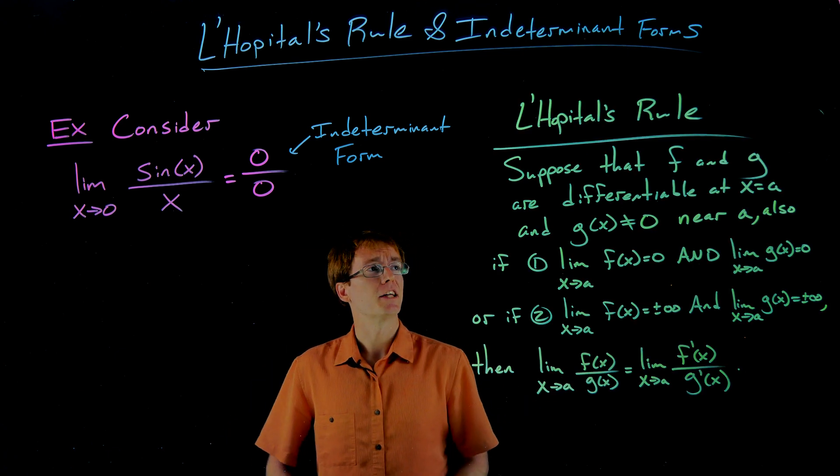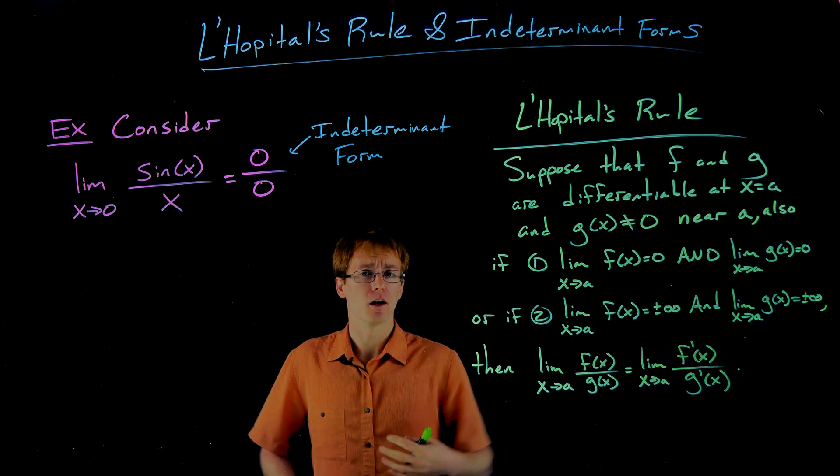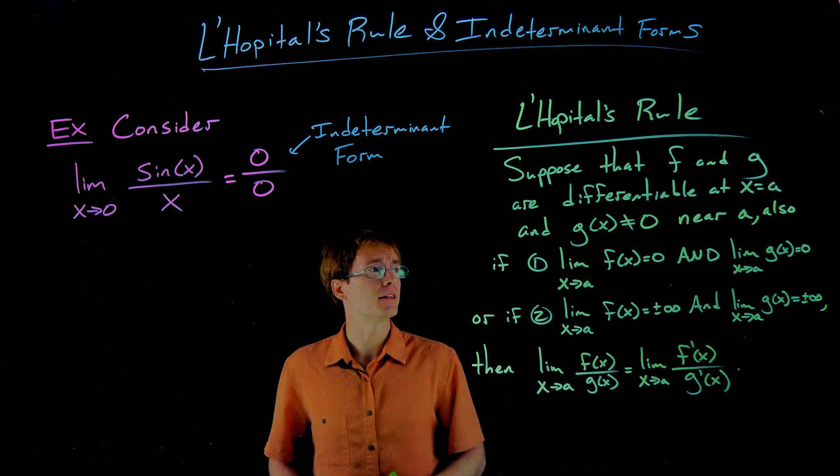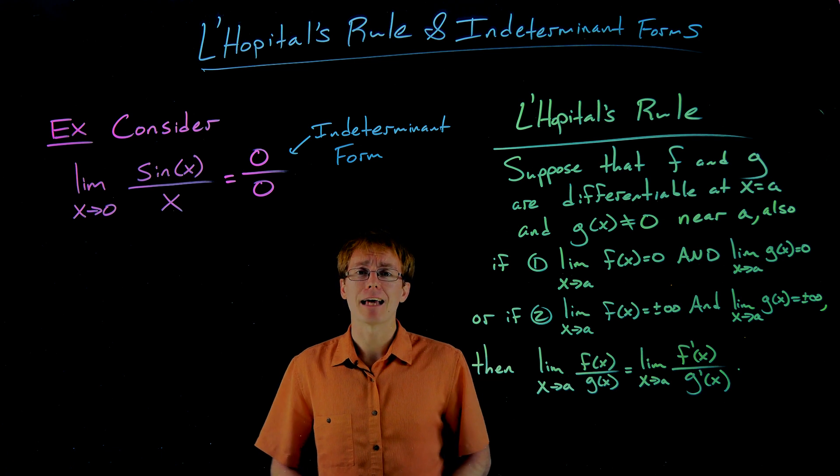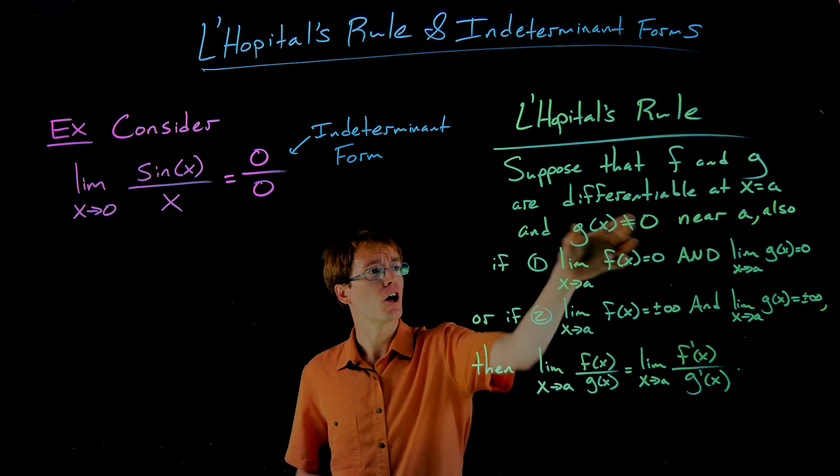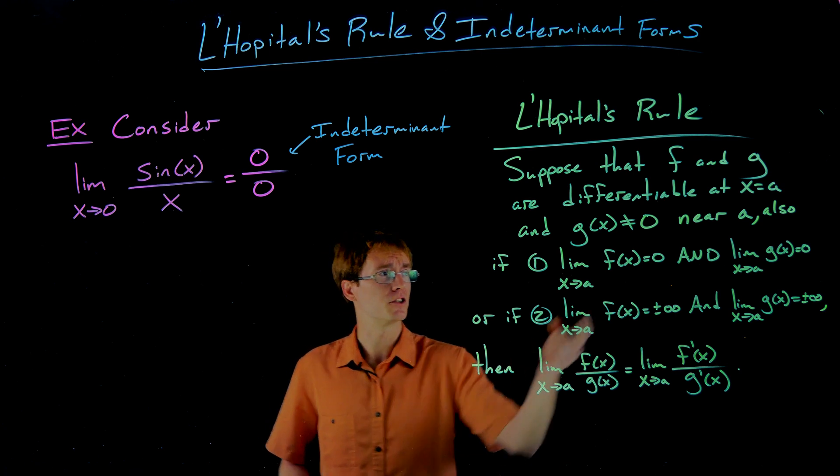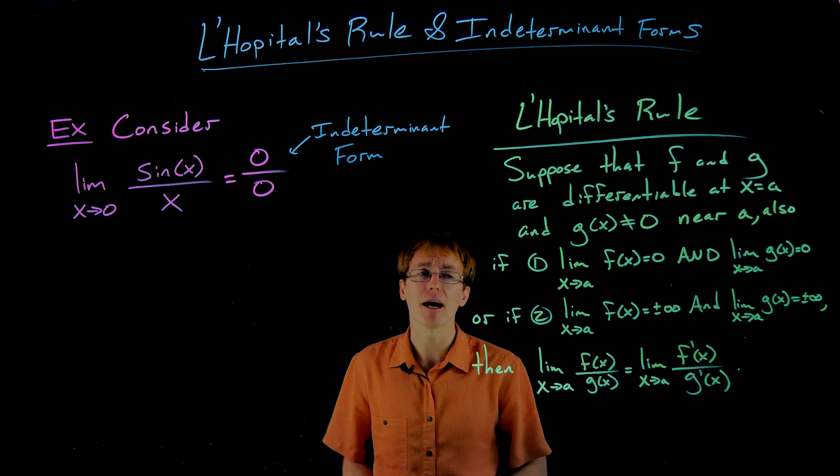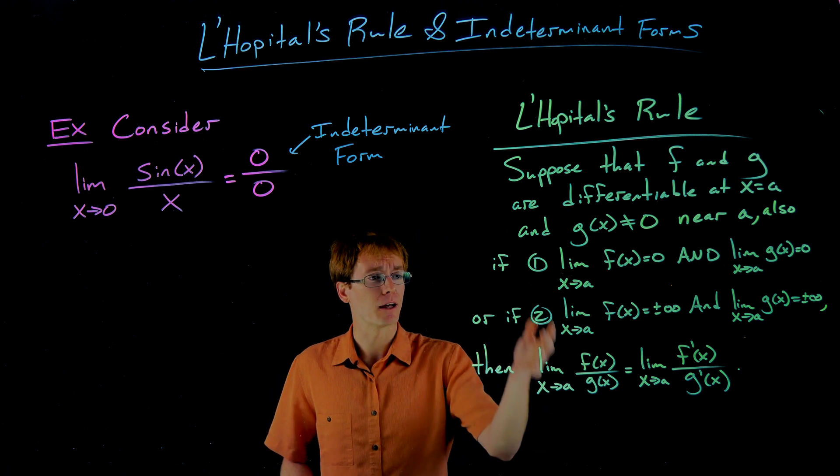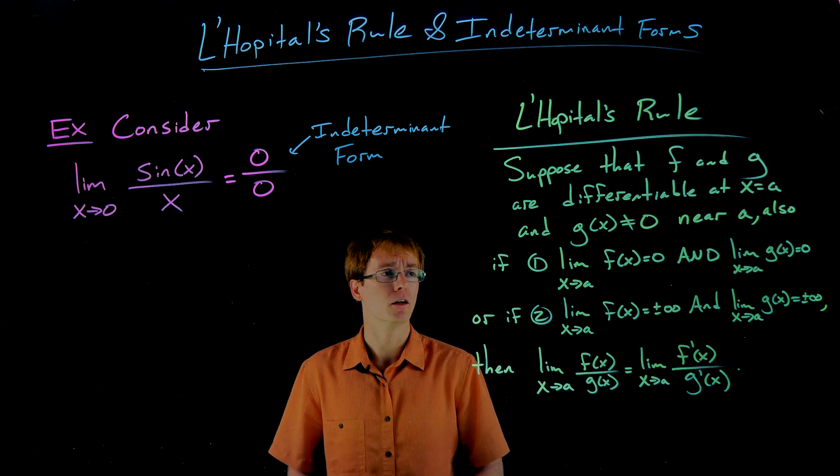So what L'Hopital's rule says is if we have two functions, f and g, they're differentiable, so we can actually take their derivatives and evaluate them. So they're differentiable at this x value of a, that's going to be our limit value of interest, and our denominator function g of x is not equal to zero near a. It could be equal to zero at a, but just really close by, it's not equal to zero. And then if we have one of these following two conditions met, then we can apply this thing called L'Hopital's rule.